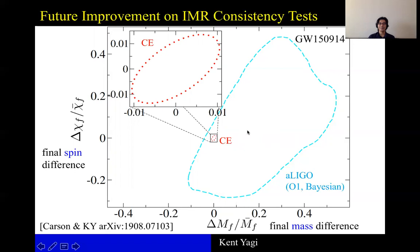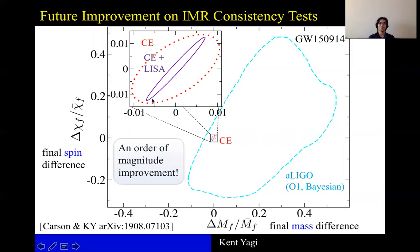if we have multi-band observation between Cosmic Explorer and LISA, then we can do even better when the error ellipse now becomes this purple one. So we will have order of magnitude improvement in terms of this kind of test if we have Cosmic Explorer or multi-band detection.